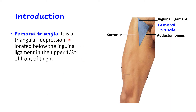Femoral triangle is a triangular depression located below the inguinal ligament in the upper third of front of thigh. This is the front of the thigh, and if you divide it into three parts - lower, middle, and upper - the femoral triangle is located in the upper third, just below a ligament which stretches between anterior superior iliac spine and pubic tubercle, known as the inguinal ligament.